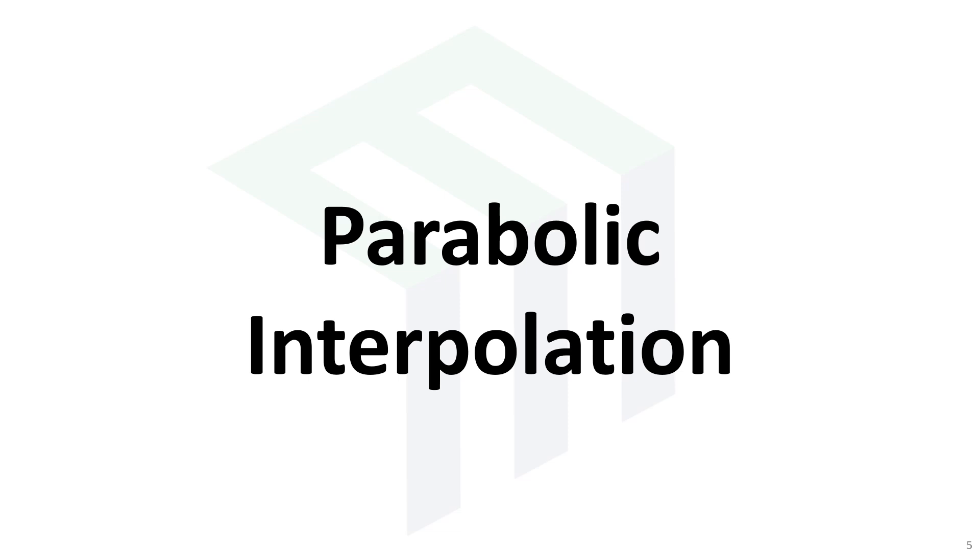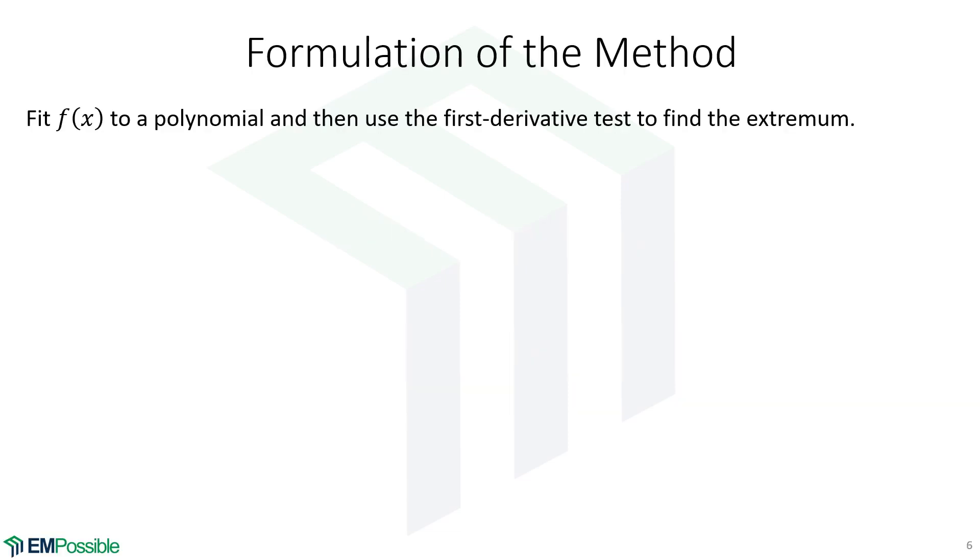Parabolic interpolation. This method is simple. We have some function. And we know generally maybe where the extremum is. So what we'll do is we will fit a polynomial to that, hopefully spanning that extremum, and then use the first derivative test on that polynomial to find the extremum. So step one, we pick three points that hopefully span the extremum, or they at least characterize the shape of the curve enough that our polynomial will find the extremum to our desired degree of accuracy.